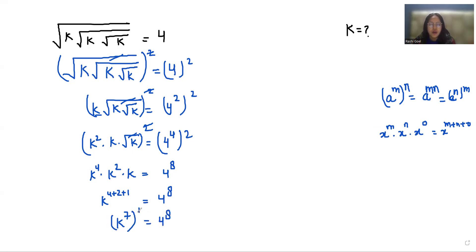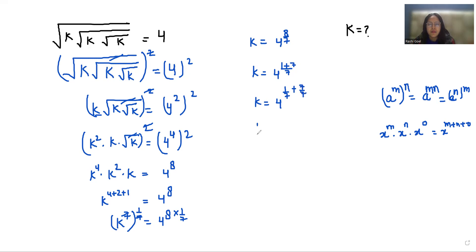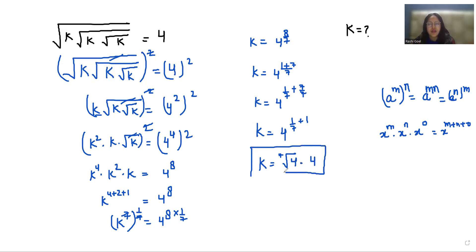Now I'm going to multiply the power by 1 over 7 on both sides so we can eliminate the power on k. So k equals 4 to the power 8 over 7. We can write 8 over 7 as 1 plus 7 over 7, so k equals 4 to the power 1 over 7 plus 1, which means k equals the 7th root of 4, times 4. This is the value of k.